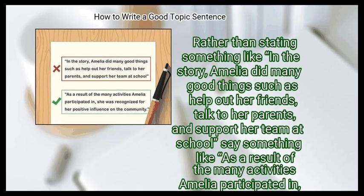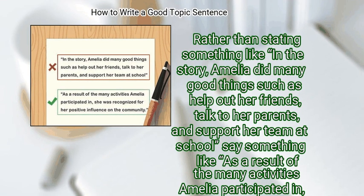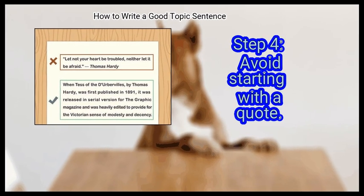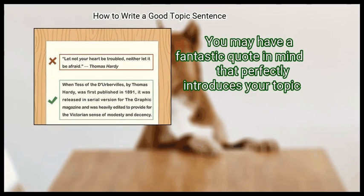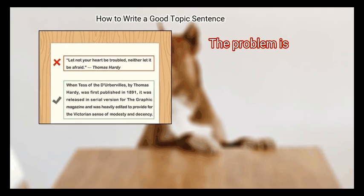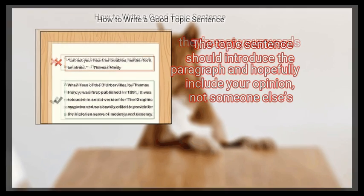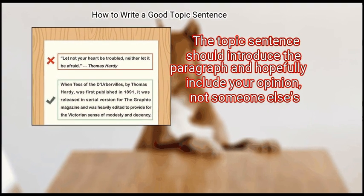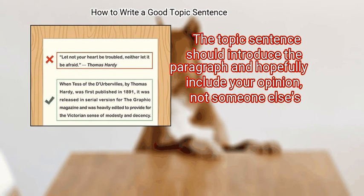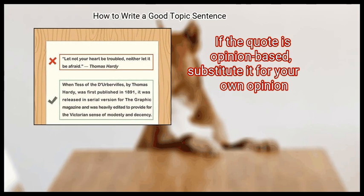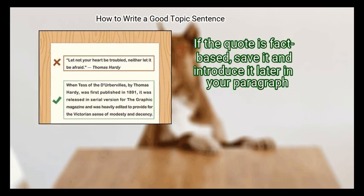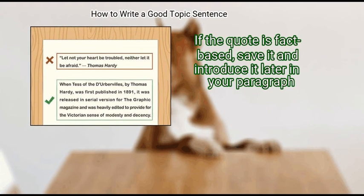Rather than stating 'in the story, Amelia did many good things such as help out her friends, talk to her parents, and support her team at school,' say something like 'as a result of the many activities Amelia participated in, she was recognized for her positive influence on the community.' Step 4: Avoid starting with a quote. The topic sentence should introduce the paragraph and include your opinion, not someone else's. If the quote is fact-based, save it and introduce it later in your paragraph.